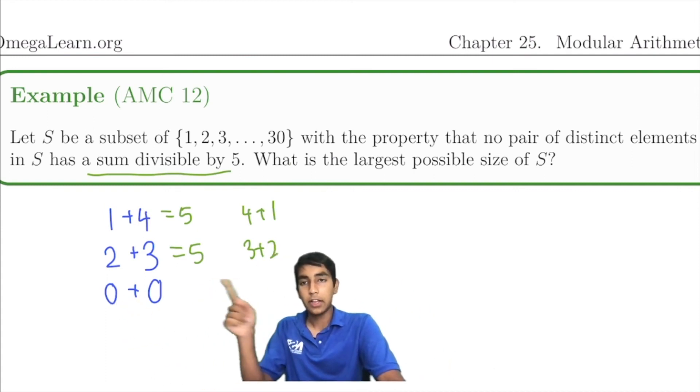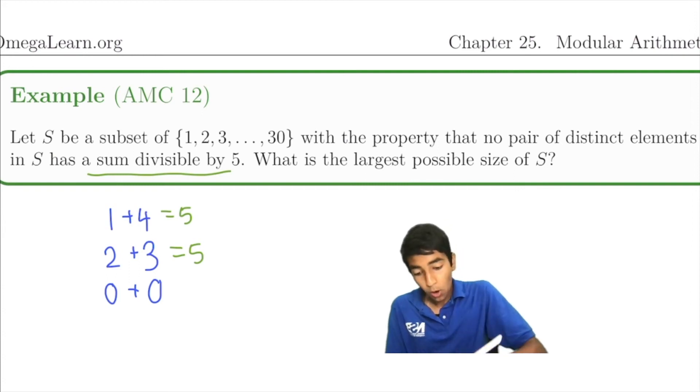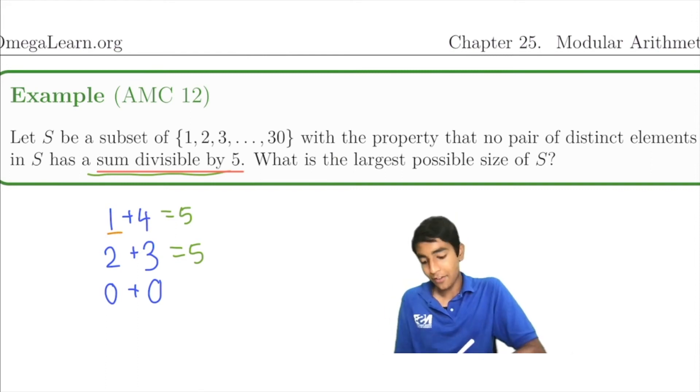So that's why these are the only cases. So what does that mean? We don't want a sum divisible by 5. So that means we cannot have a number that both leaves a remainder of 1 when divided by 5, and 4 when divided by 5. Similarly, we can't have a number with a remainder of 2 when divided by 5, and a number with a remainder of 3 when divided by 5.